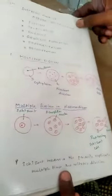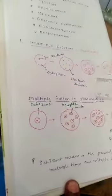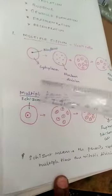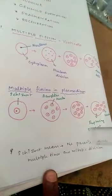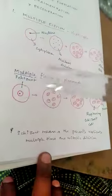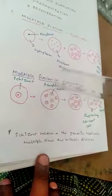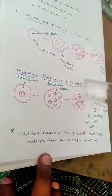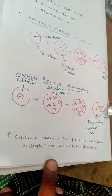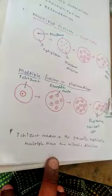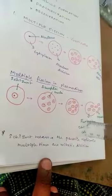Next topic: Multiple Fission in Plasmodium. Plasmodium is a protozoan. In the cyst stage, the parasite replicates DNA multiple times through mitotic division. In the cyst stage, the nucleus divides into many daughter nuclei. The daughter nuclei are surrounded by cytoplasm. Merozoites are released. Merozoites means daughter cysts — repeating cyst cells. This process is called Multiple Fission in Plasmodium.